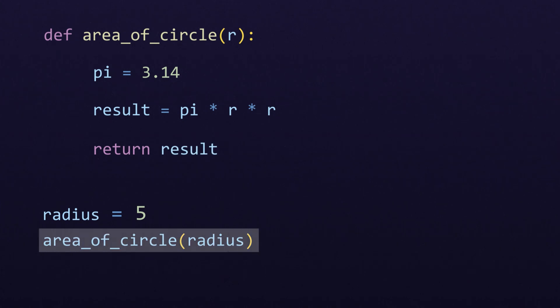Execution jumps back to the function call at this point, and we capture the return value in a new variable called area, and if we want to, we can just print it.